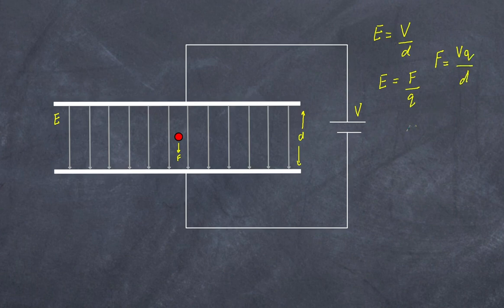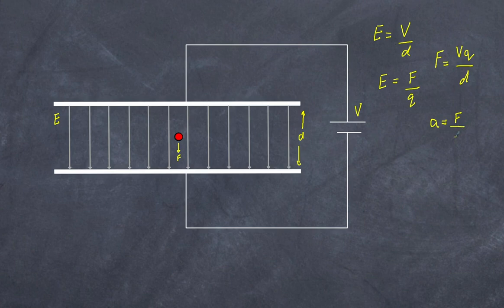Once you've established that force, you can determine the acceleration using Newton's second law — that is, the acceleration of the particle is equal to the force divided by the mass of the particle.